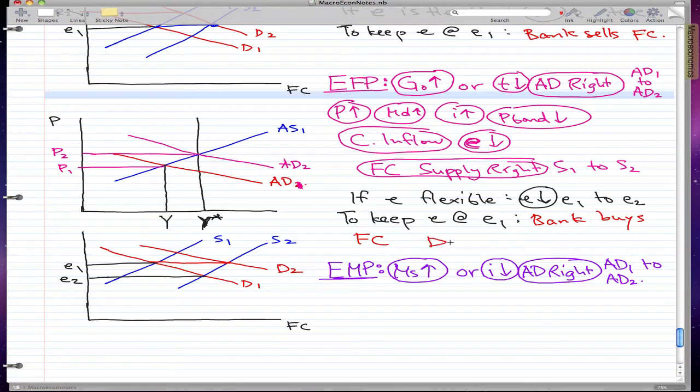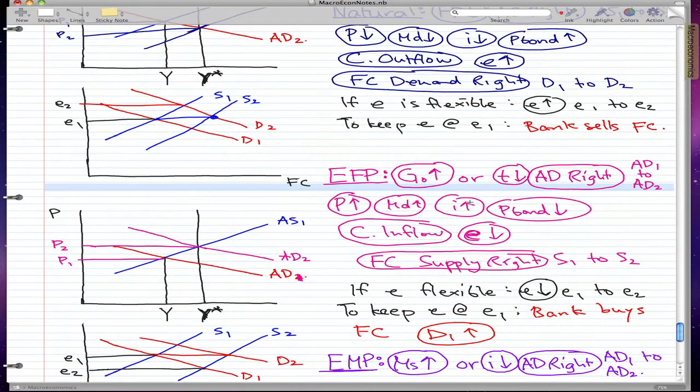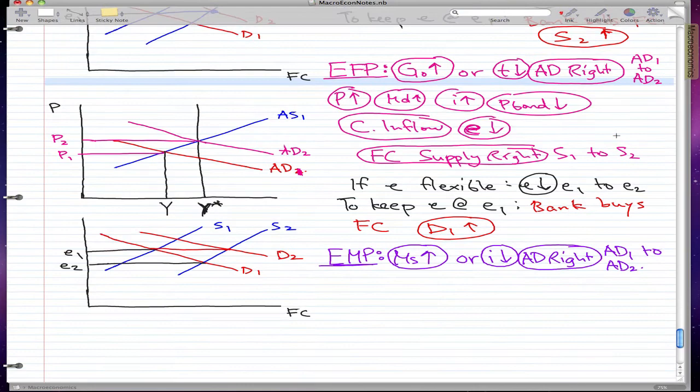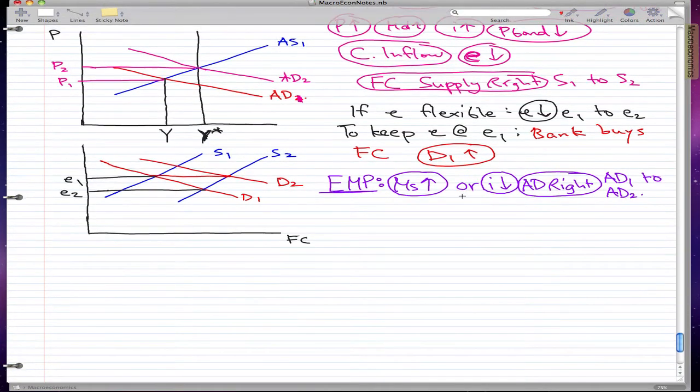I should also put here that in this case S1 moved to S2, so it moved right. S2 also rises - by rise I mean they moved to the right. The last thing to do is expansionary monetary policy. MS increases or i decreases, AD moves right from AD1 to AD2.